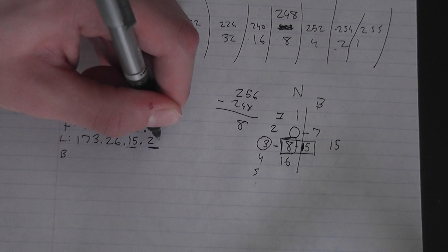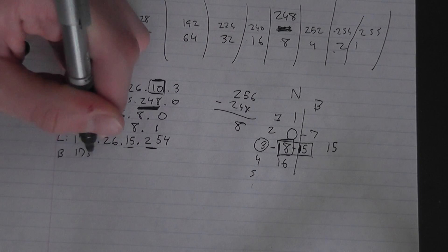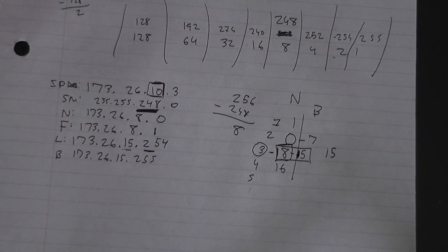So it's 254 - one minus. 173.26.15.255 is your broadcast. That's it, you're done. Let's do one more example.